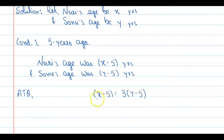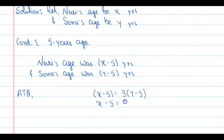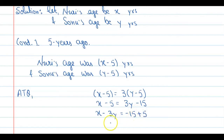Because it was said that Nuri's age 5 years ago was thrice Sonu's age. If we simplify this, X minus 5 equals 3Y minus 15. Rearranging, X minus 3Y equals minus 15 plus 5, which gives X minus 3Y equals minus 10. Mark this as Equation number 1.